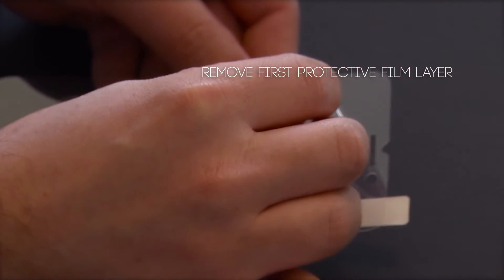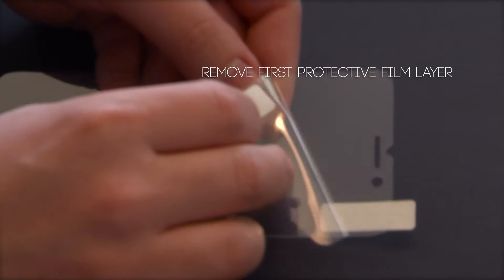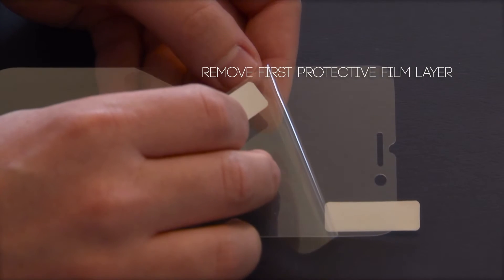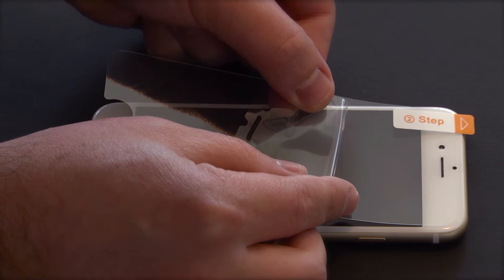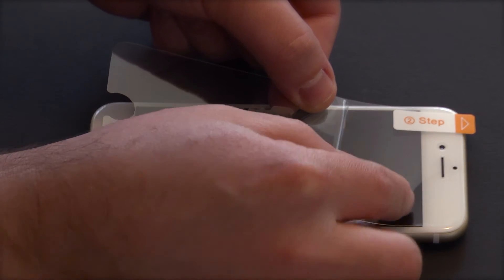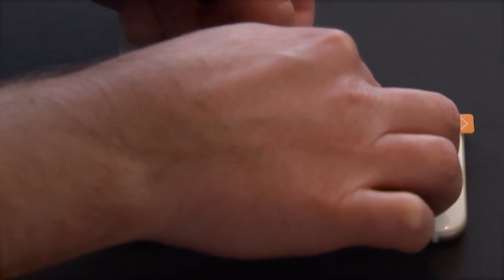Peel away the first protective layer of film, labeled 1, a few inches to expose a small section on the adhesive side of IntelliArmor. Holding only the sides of IntelliArmor, align it with your device and adhere the exposed section to the screen.